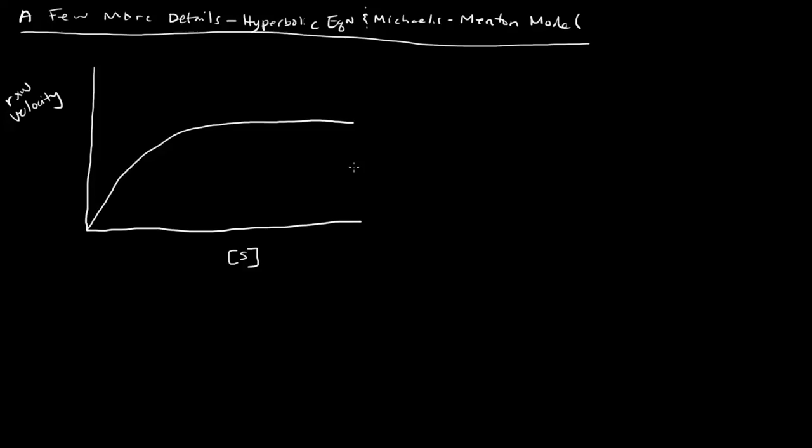That's because at a certain point we reach Vmax — that maximum velocity up here is Vmax. And at Vmax over 2, we had what was called the Km. So that substrate concentration there was the Km. The Km was the substrate concentration at Vmax over 2.